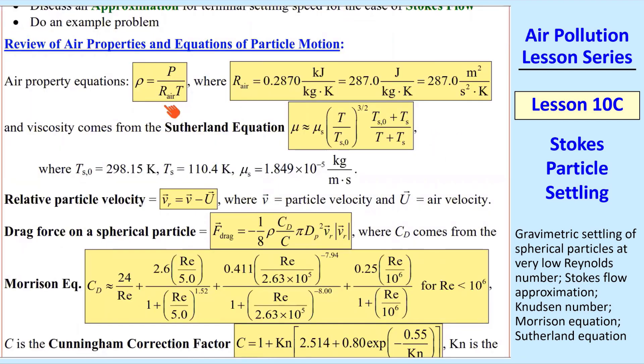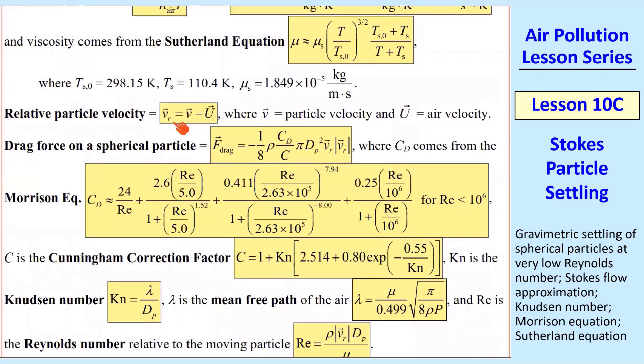Before I do that, I have just a quick review. Two air properties: we have the ideal gas law, and then we have the Sutherland law to get the viscosity, and these are all the constants for that. We defined relative particle velocity, where V is the particle velocity and U is the air velocity, and so the relative velocity is just the difference between the two.